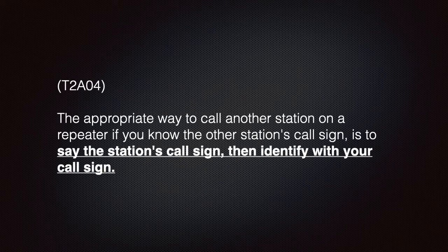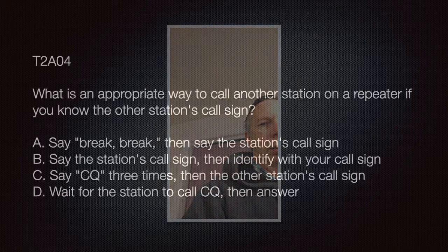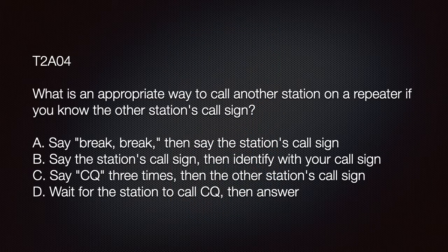We need to know that the appropriate way to call another station on a repeater, if you know the other station's call sign, is to say the station's call sign then identify with your own call sign. For example: N2RRQ, this is KE2GS.